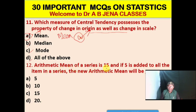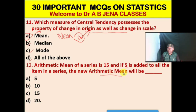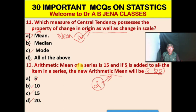Next MCQ: The arithmetic mean of a series is 15. If 5 is added to all the items in a series, the new arithmetic mean will be what? A. 5. B. 10. C. 15. D. 20. D is the right option. The new arithmetic mean will be 20.